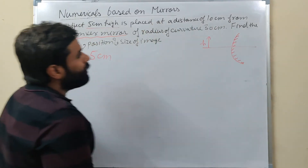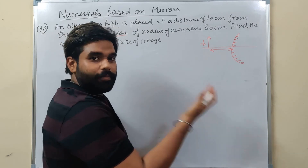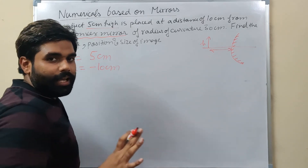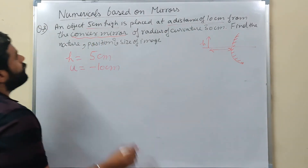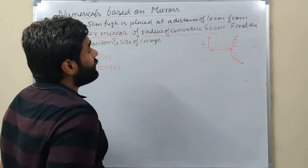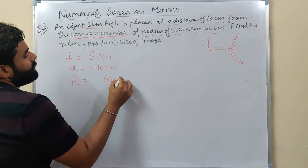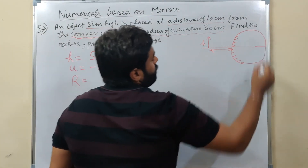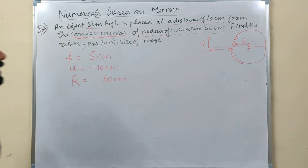Object is placed at 10 cm from convex mirror. Object is always on the left of the mirror, so u = -10 cm. From a convex mirror of radius of curvature 30 cm. Radius of curvature is given as 30 cm. The centre of curvature for a convex mirror is on the right side, so R = +30 cm.